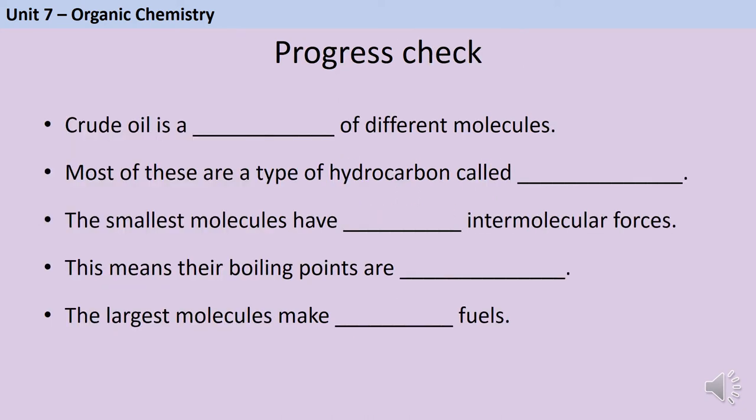Time for a quick progress check. Pause the video and see if you can fill in the gaps in these five sentences. Crude oil is a mixture of different molecules and most of these are a type of hydrocarbon called an alkane. The smallest molecules have the weakest intermolecular forces and this means that their boiling points are much lower. The largest molecules make poor fuels because they burn with a very smoky flame and are less flammable.